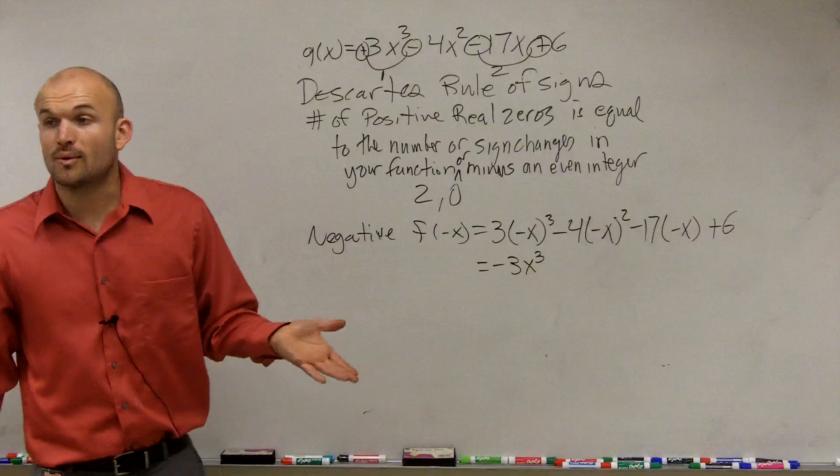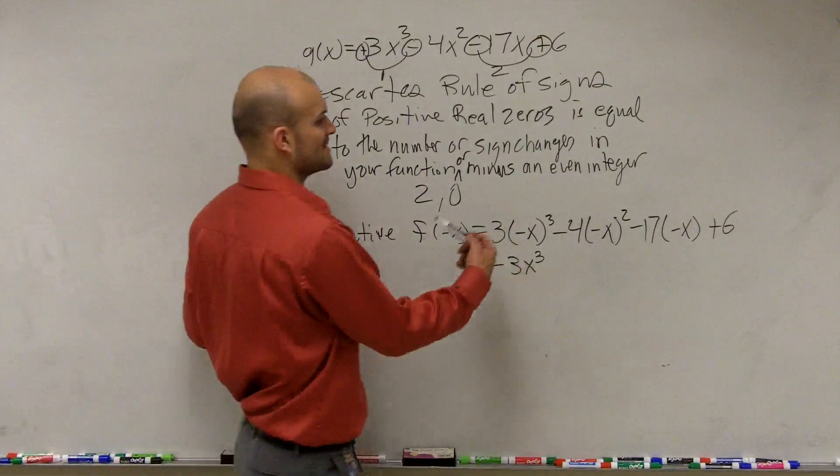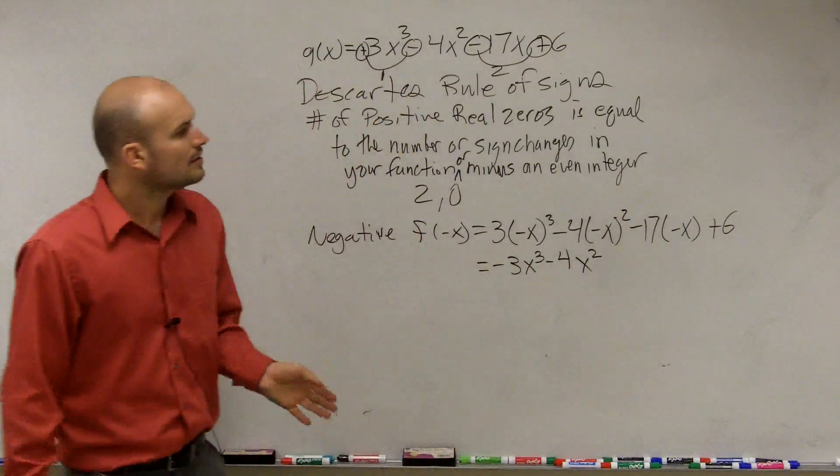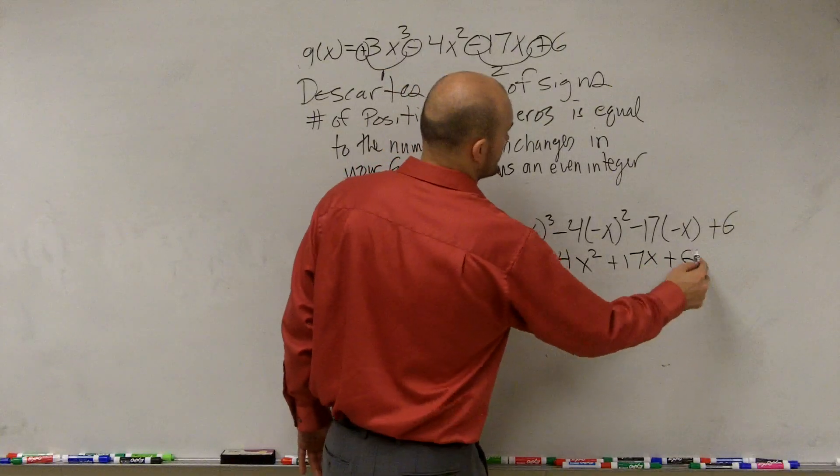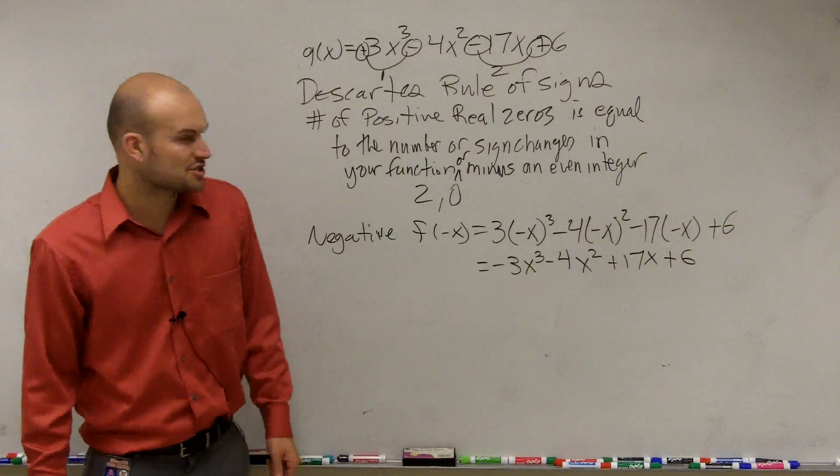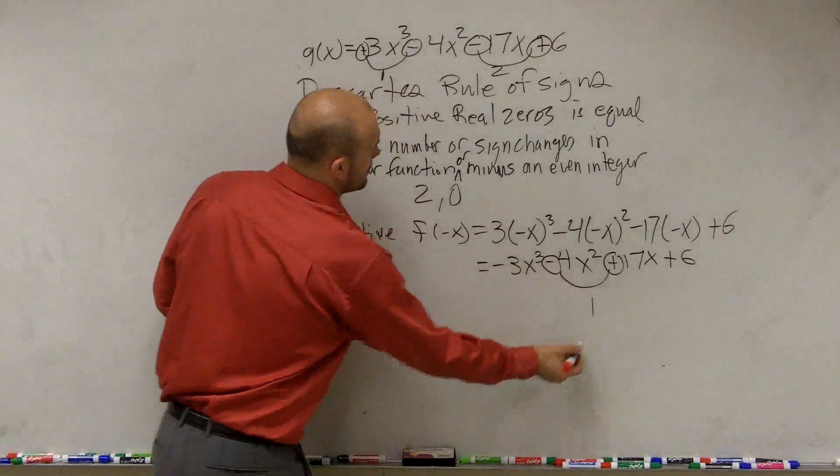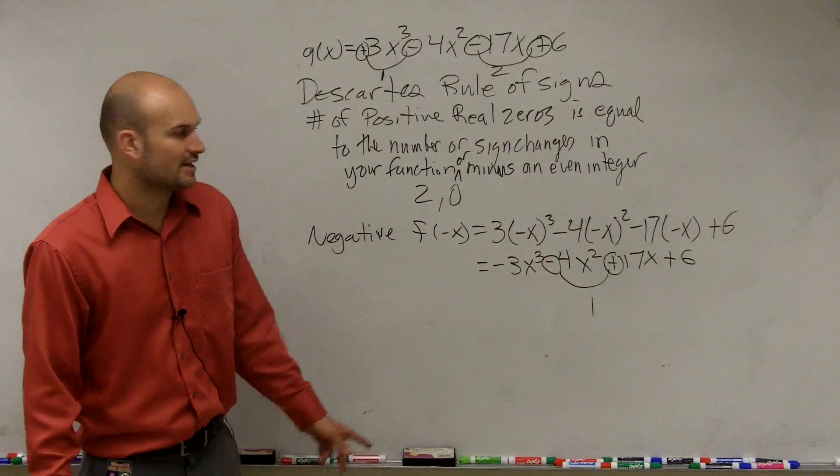Negative x squared is now turns to positive. And then times a negative 4 is now negative 4x squared. Negative 17 times negative x is now a positive 17x plus 6. So let's see how many sign changes we have here. Well, there's only one. So therefore,